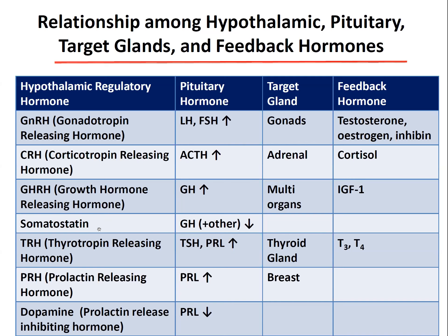Somatostatin negatively affects growth hormone release. TRH, the thyroid releasing hormone, affects TSH, and highly elevated TRH can also increase prolactin levels, though normally prolactin is not altered by TRH in a physiologic range. TSH affects the thyroid gland, causing increases in T4 and T3, with T4 mainly providing feedback to the pituitary. Prolactin causes breast development and milk production, and dopamine — the prolactin release inhibiting hormone — negatively regulates prolactin levels.